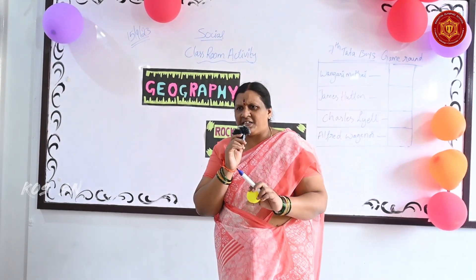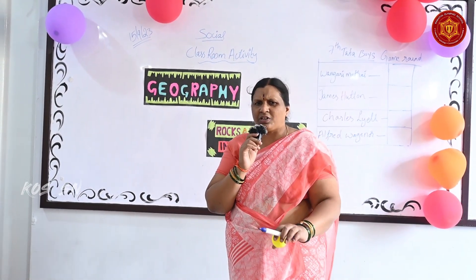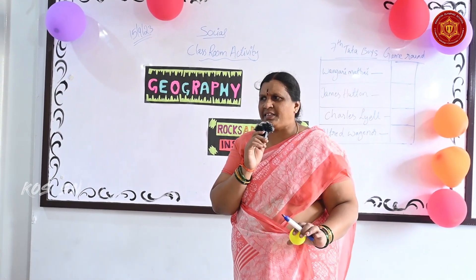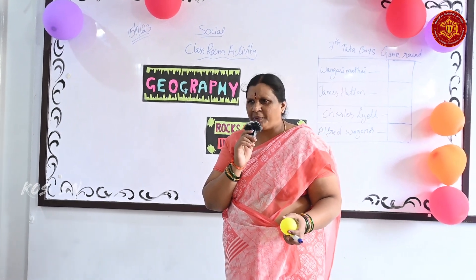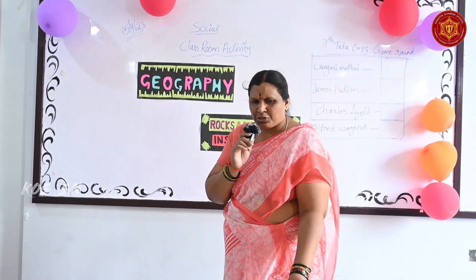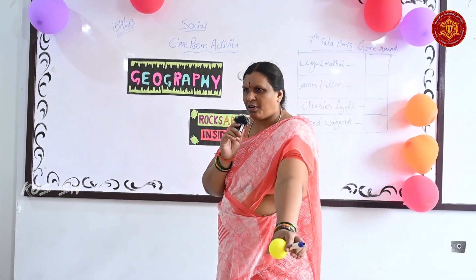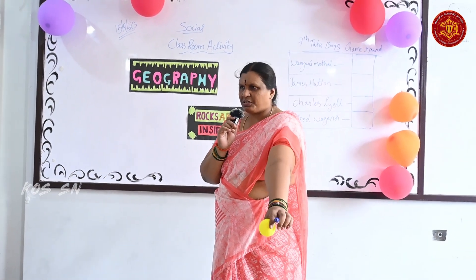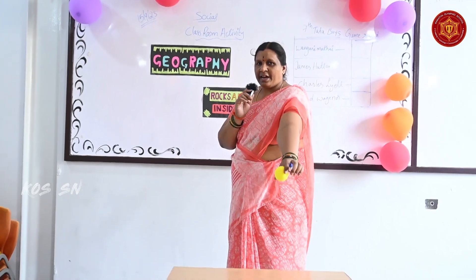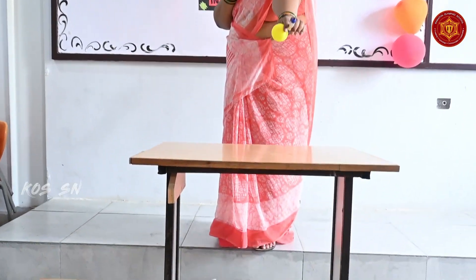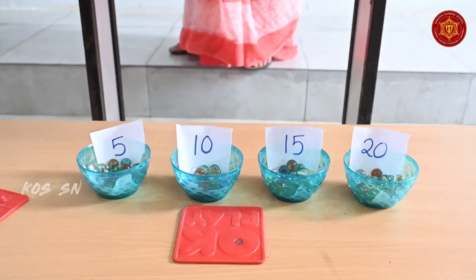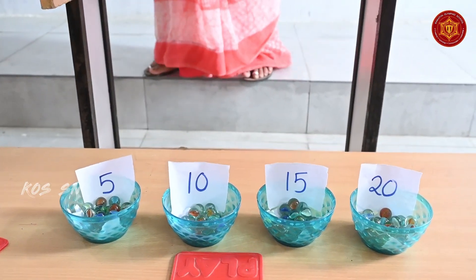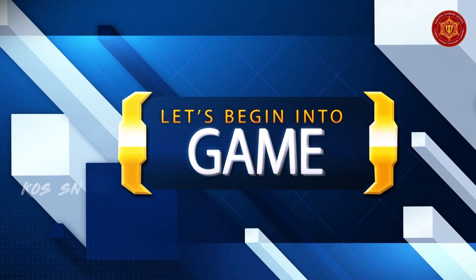Now we are going to start our game. Round one — one member from each team has to come and participate. Do you know how to play? Just throw this ball down through the table, and after rolling it will fall into one tumbler. Here four tumblers are kept out.